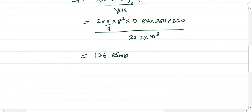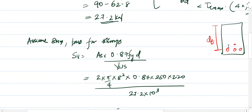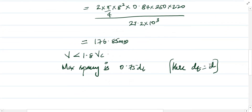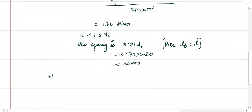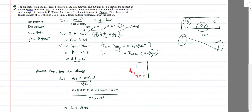Maximum spacing allowed = 0.75 × dt = 0.75 × 220 = 165 mm. Since the calculated spacing of 176.85 mm exceeds this limit, we cannot use 176 mm. Therefore, we provide 8 mm 2-legged stirrups at 160 mm center-to-center (rounded to the nearest 10 mm) as shear reinforcement. This completes the design for the web shear case.